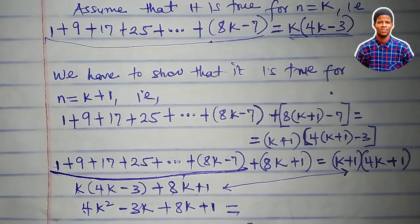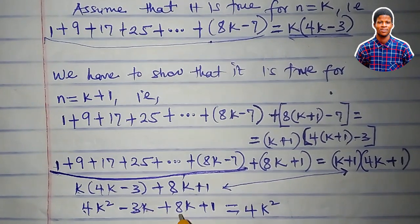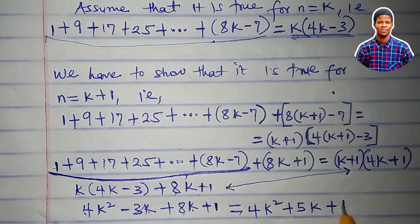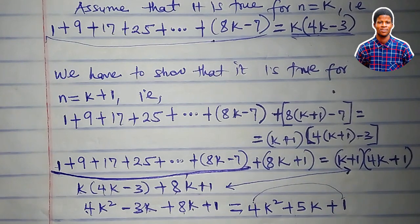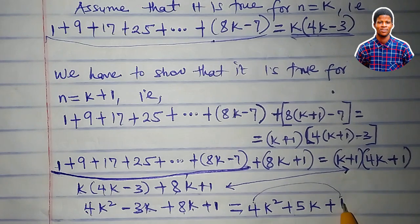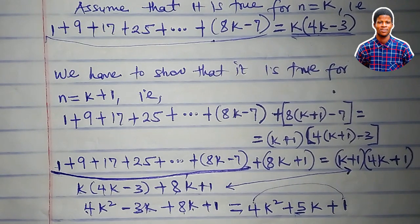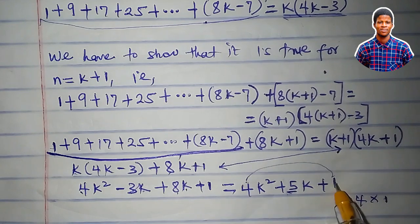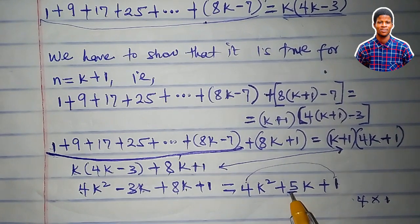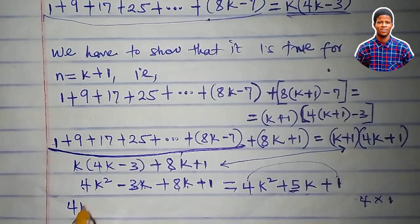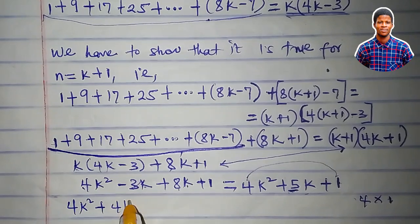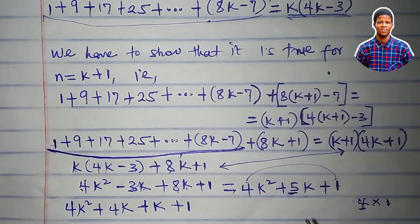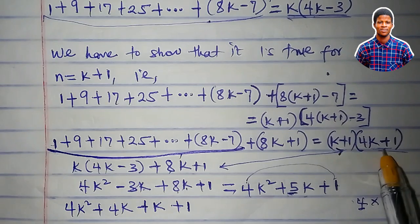We have 4k squared, minus 3k plus 8k is 5k, plus 1. So we have to factorize this expression: 4 times 1 is 4. I need two numbers that multiply to give 4 and add to give 5, and the two numbers are 4 and 1. So in place of 5k I will write 4k plus k, plus 1. Remember the goal is to reduce this expression to the target expression.